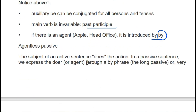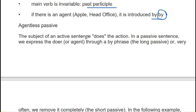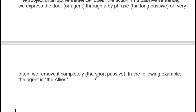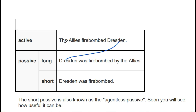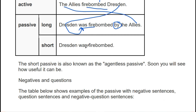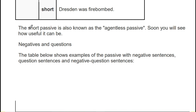The subject of an active sentence does the action. In a passive sentence, we express the doer or agent through a 'by' phrase, or very often we remove it completely — this is the short passive. For example: 'The allies firebombed Dresden.' 'Dresden' comes to the front, 'by the allies' goes to the end. This was simple past, so it jumps to past continuous. Since 'Dresden' is singular, we use 'was': 'Dresden was firebombed by the allies.' We can also shorten it to 'Dresden was firebombed.' The short passive is also known as the agentless passive.